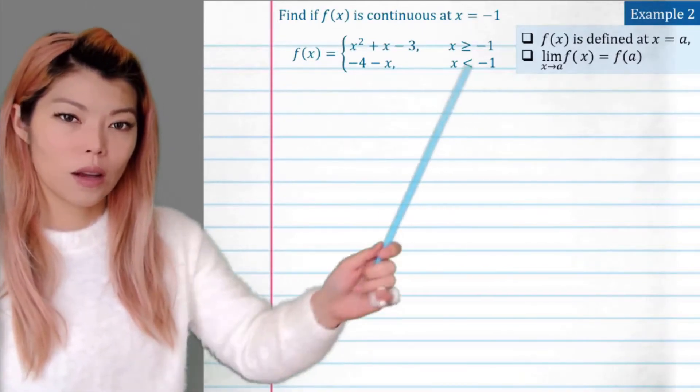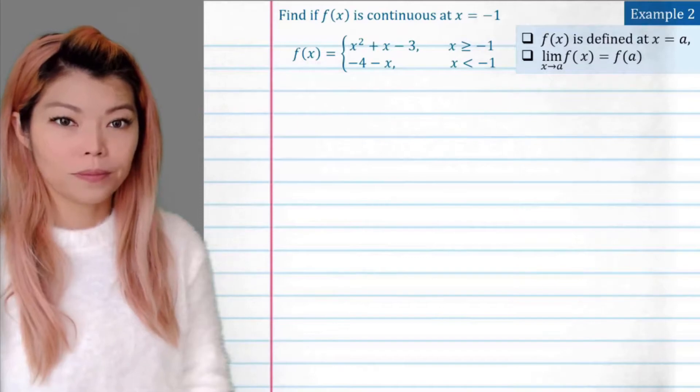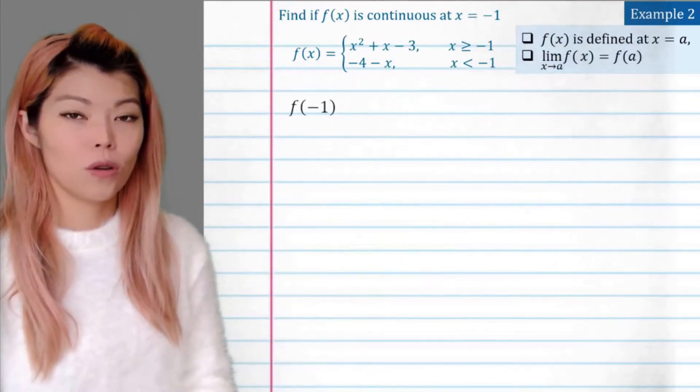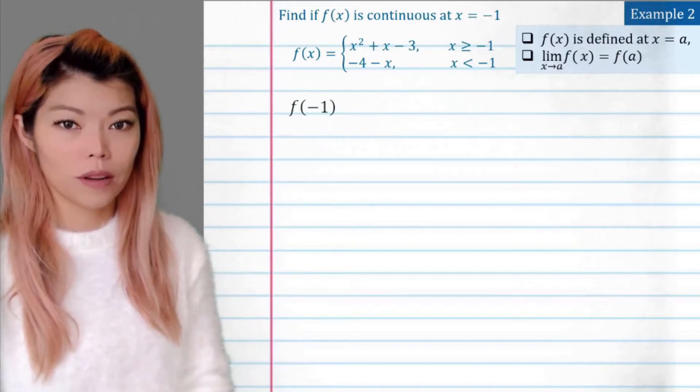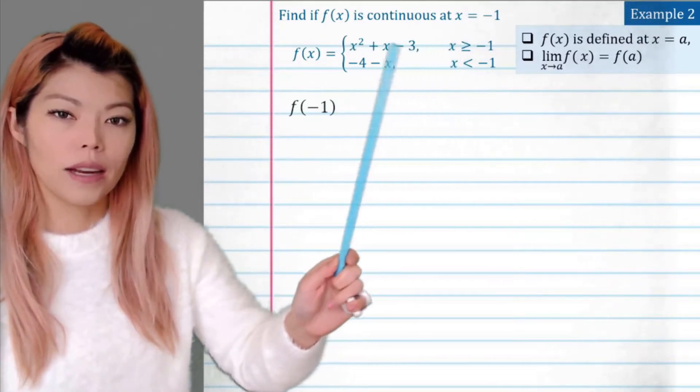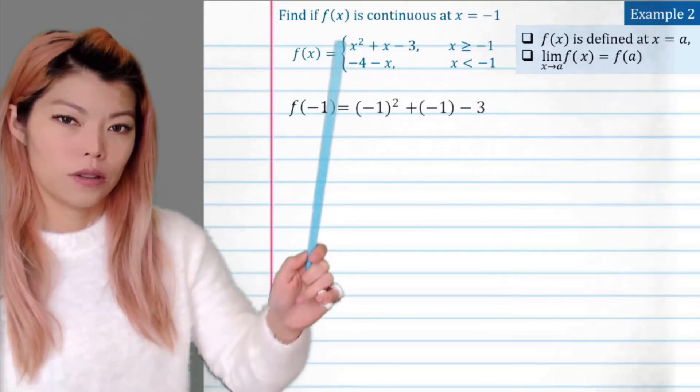So let's answer the question. Is it continuous or not? So first of all, we have to find the top line. Does it have a y coordinate at that point? So does the point even exist there? For negative 1, we can see the equal sign is on the top line, so we evaluate for negative 1 using the top line.